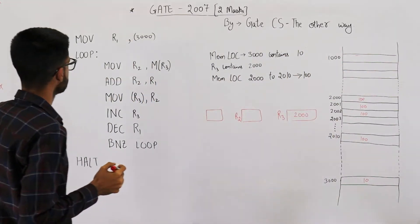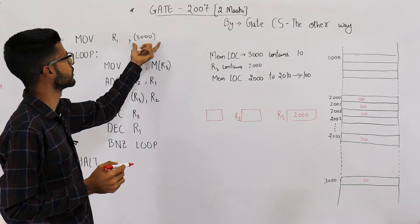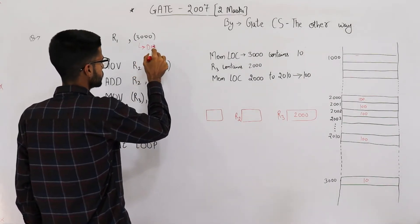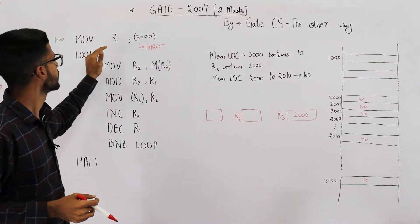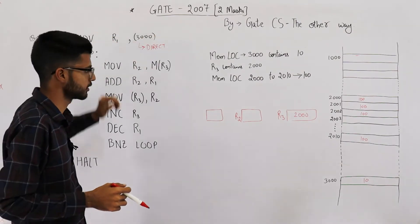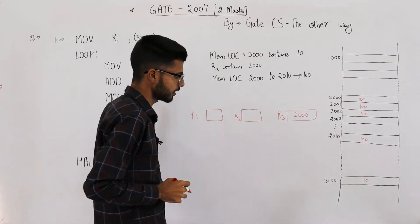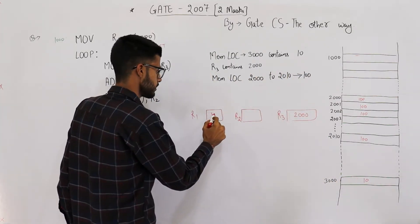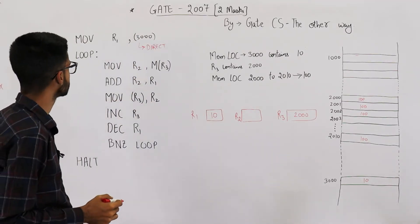The first line says MOV r1, [3000]. Writing the address in brackets means this is direct or absolute addressing mode. The meaning of this instruction is: whatever is saved in memory location 3000, move it into register r1. Since 3000 contains value 10, r1 now contains 10.